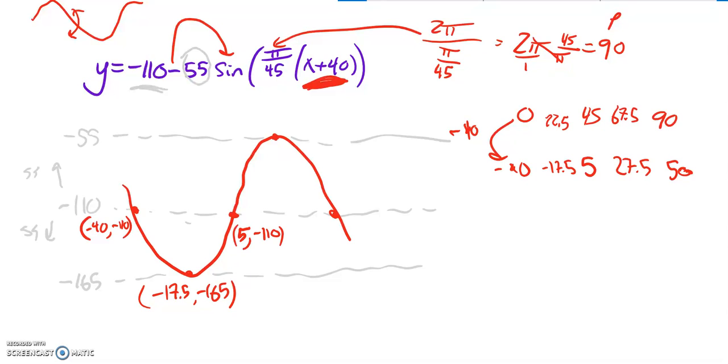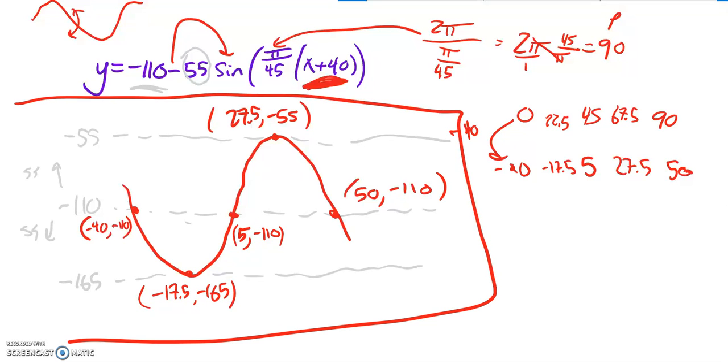But my next one is 27.5 up here at negative 55. And then my last point, the X coordinate is 50 and the Y part is negative 110. There's my sketch right there.